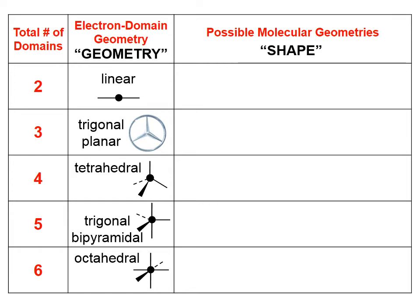The molecular geometry, or shape, depends on how many of the domains shown in the electron domain geometry have atoms hanging off the end. For example, in the tetrahedral electron domain geometry, there are four possible places for exterior atoms. Whether all four, three, or only two of those places have an atom determines the name of the molecular shape.